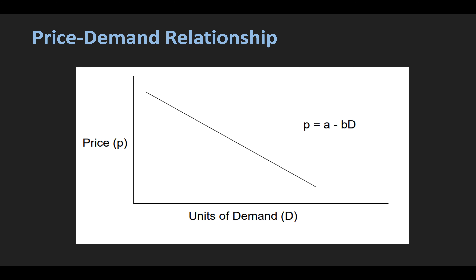So price and demand relationship — this basically shows the price elasticity. Price elasticity basically means that when the price increases, the demand decreases. Or from another relationship, if the demand increases, the price decreases. This is called price elasticity.